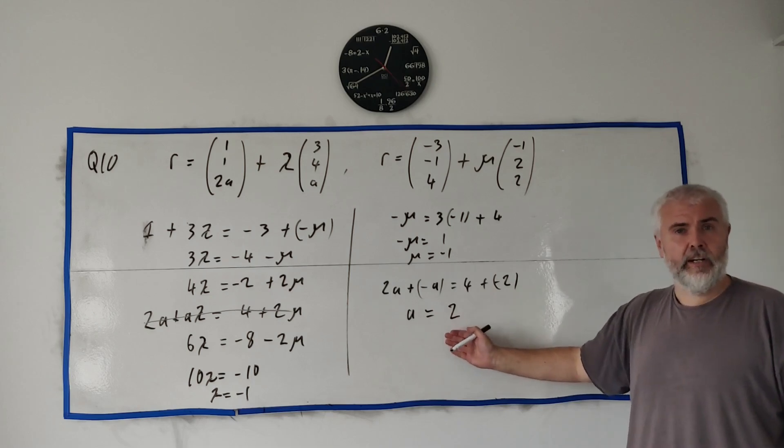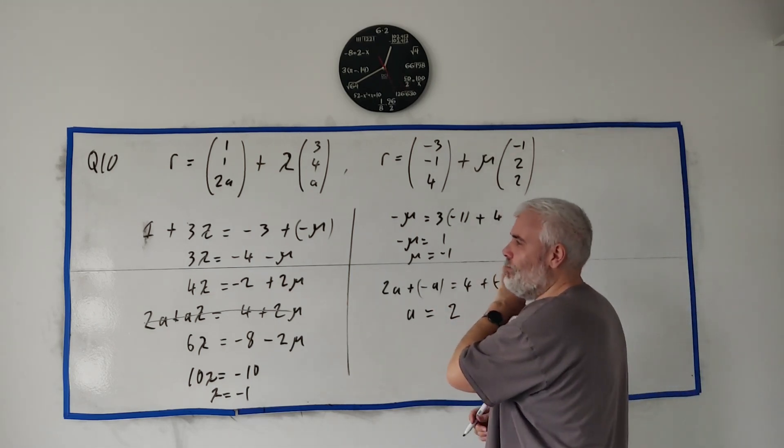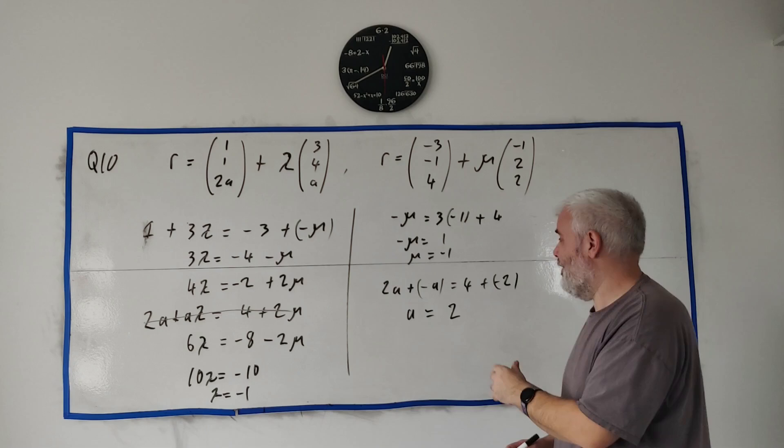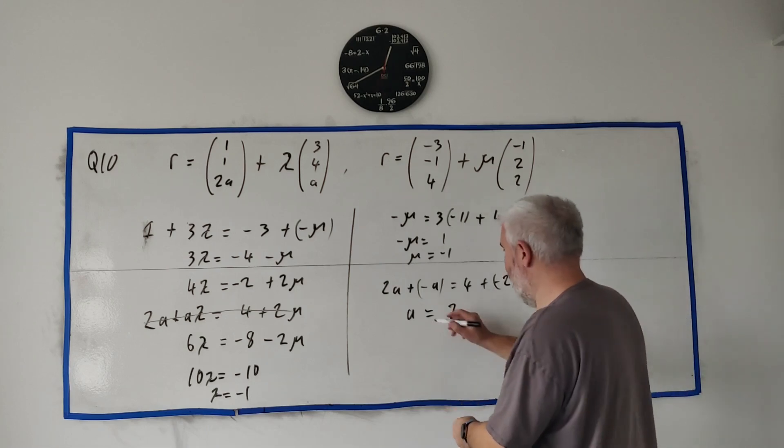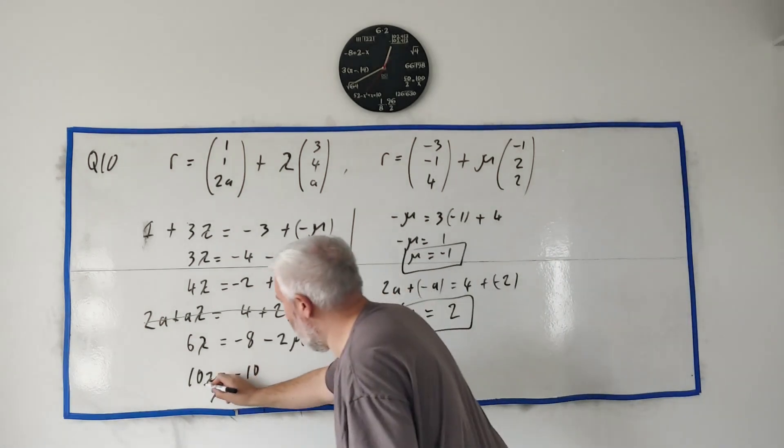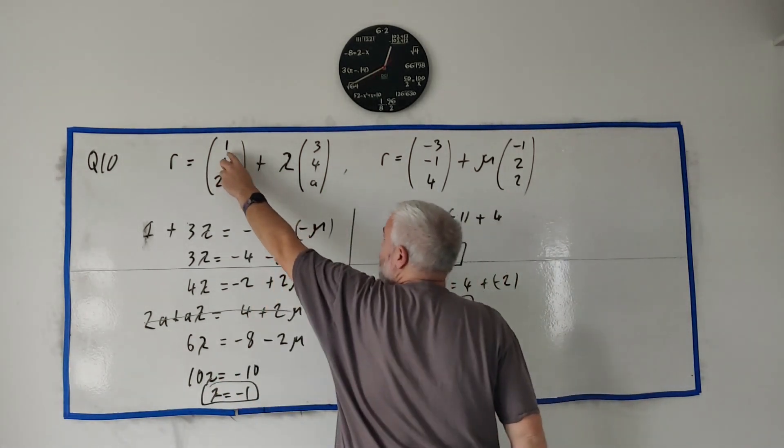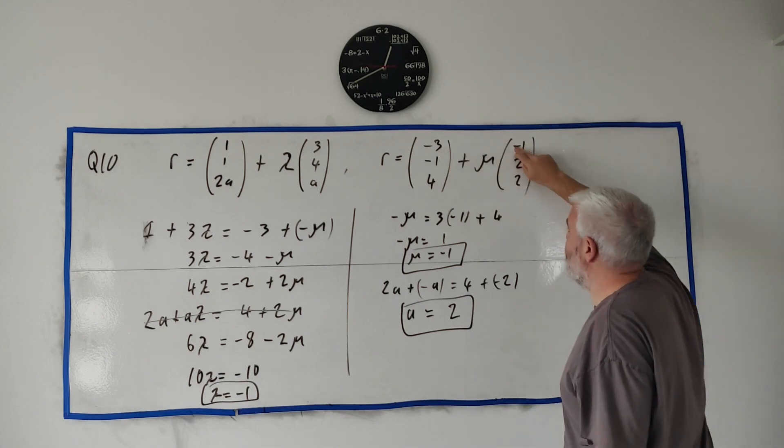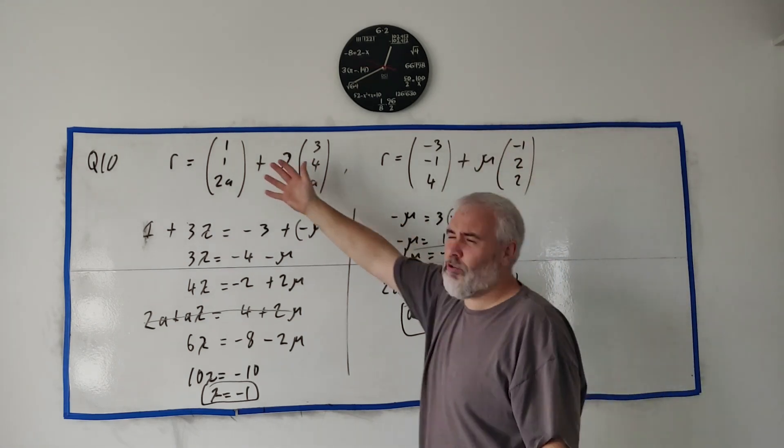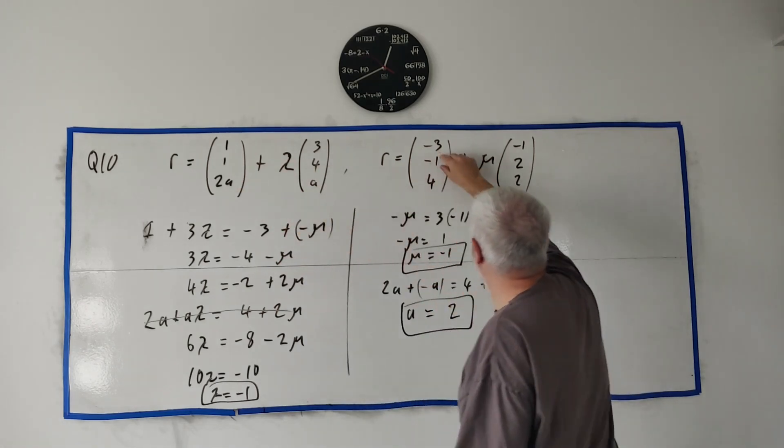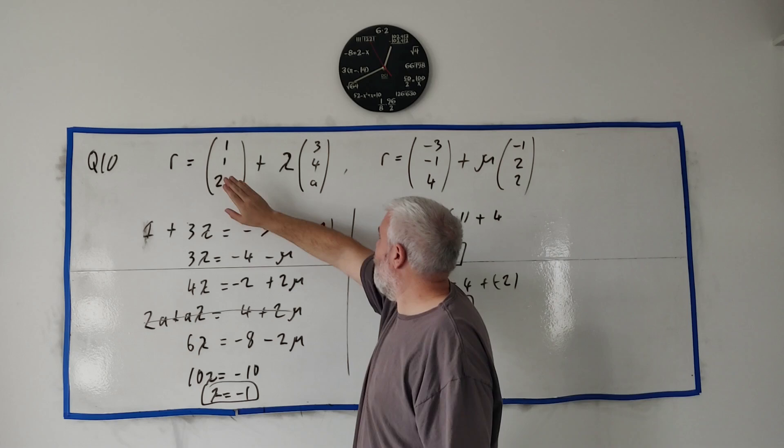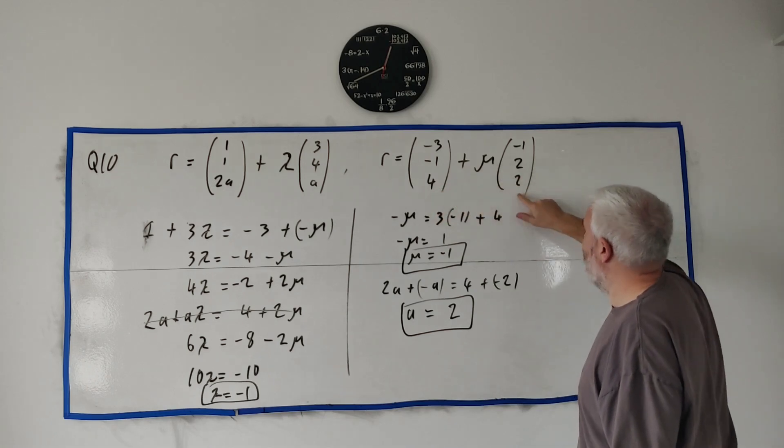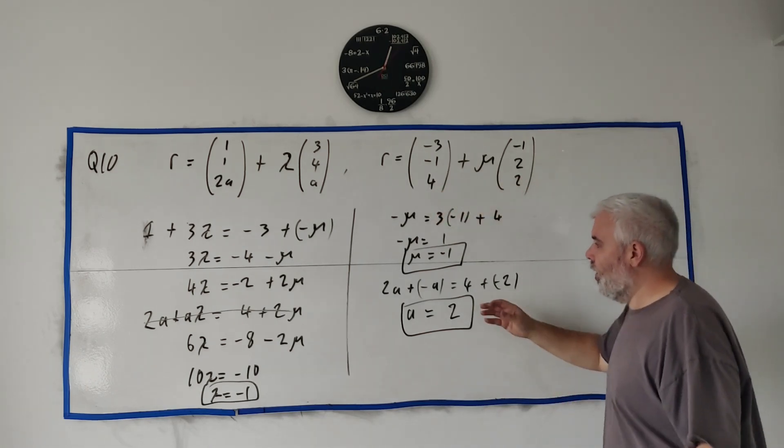But I do warn you, students make mistakes doing these all the time. Test your answer—take an extra one minute to test your answer. Imagine if I put these three numbers back into these two equations: I would get 1 - 3, I'd get -2 up the top. What about over here? I get -3 - (-1), I'd get -2, they agree. Go through all of them like that. This would be -3, that'd be -3, the bottom row would be 4 - 2, that'd be 2, and this would be 4 - 2, that'd be 2. They agree at all points. These are the correct three points.